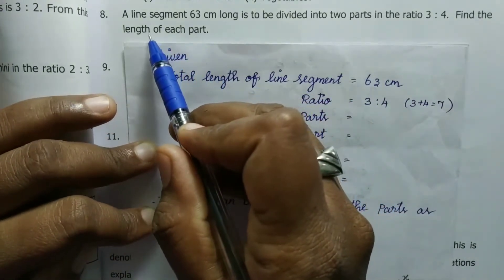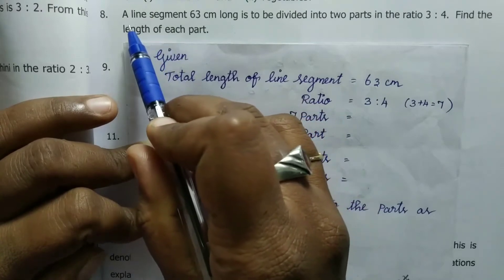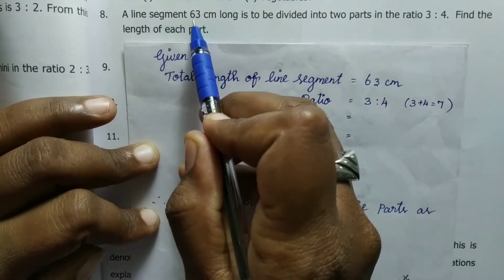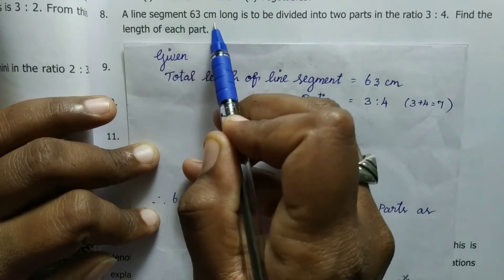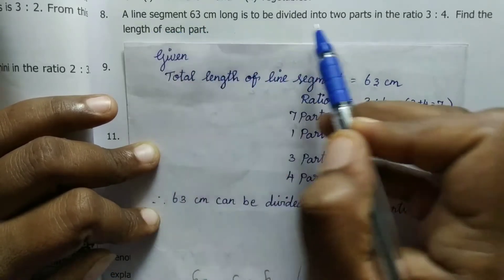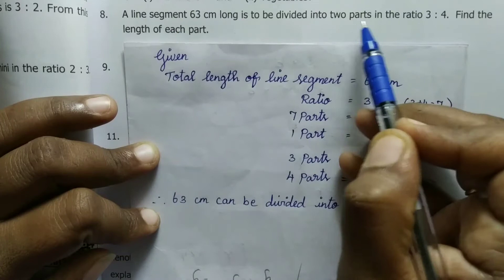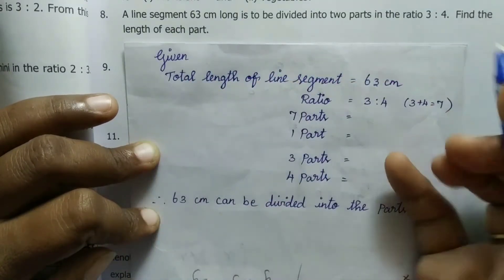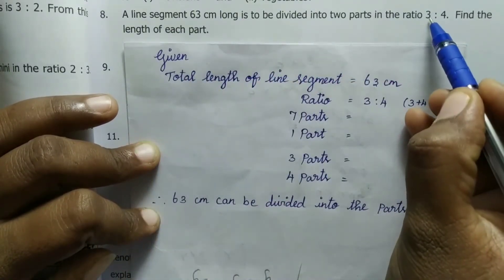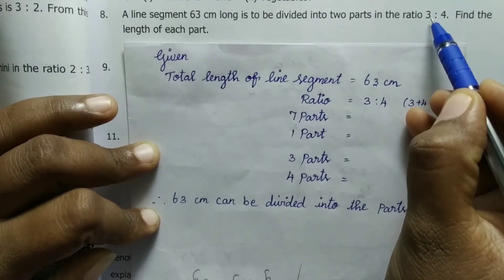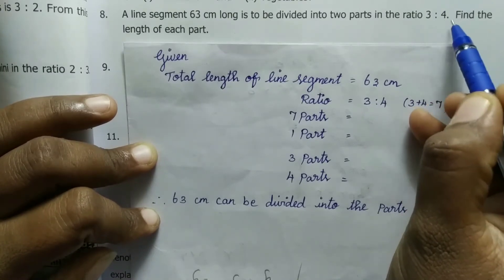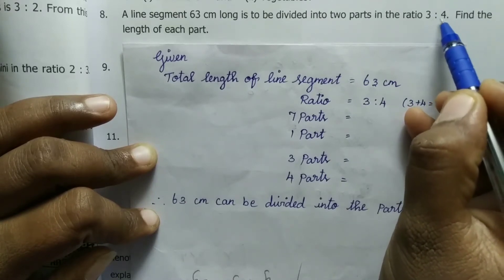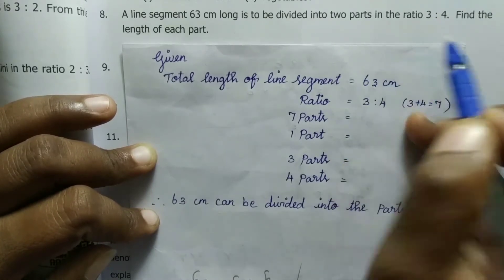In question number 8, the line segment is to be divided into 2 parts in the ratio 3 to 4. The total length is 63 cm. The ratio is 3 to 4, so the total number of parts is 3 plus 4 equals 7.